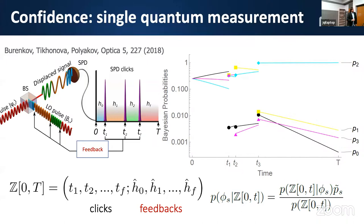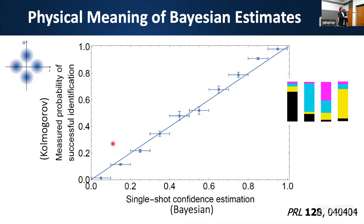These probabilities are Bayesian estimates made on a single measurement. We want them to correspond to actual Kolmogorov-type frequencies. If you group results by high Bayesian probability and check the statistical success rate, you see a very close match to y = x. The Bayesian estimate from a single shot does correspond to physical reality. Whatever the outcome is, the information known after the measurement tells you a lot about the state.